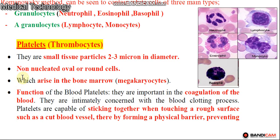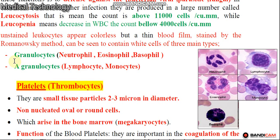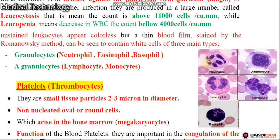Now, what are the types of white blood cells? The types are granulocytes and agranulocytes. Granulocytes are divided into three types: neutrophil, eosinophil, and basophil. Agranulocytes include lymphocytes and monocytes. Neutrophil, eosinophil, and basophil are granulocytes.